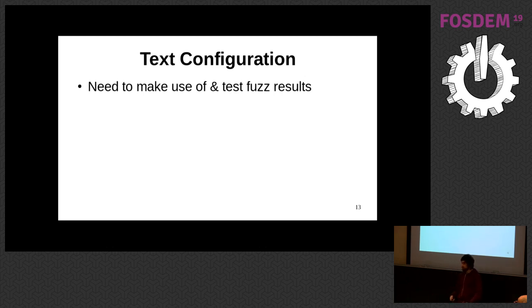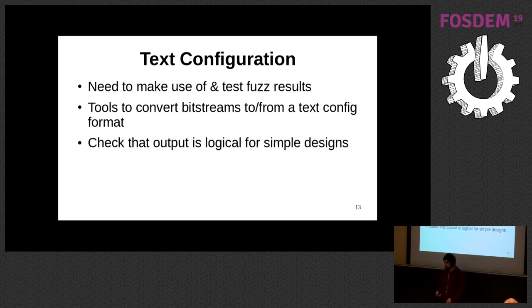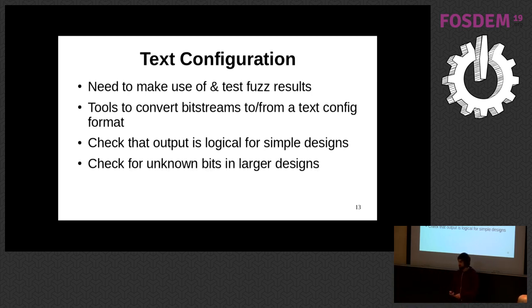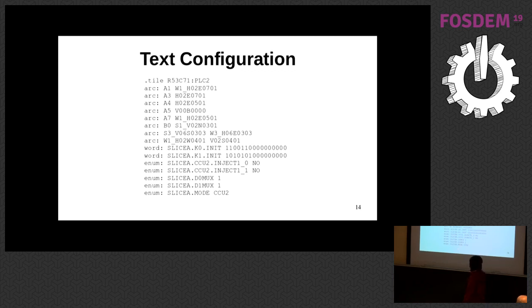To make the bitstream more human-readable, I created a textual configuration format — since a bitstream is just a series of bits, not very useful to a human. The idea is to represent it at a low level that's still easy to understand, to test fuzzing results and check sensible outputs for simple designs, look for unknown bits in bigger designs, and verify everything. This format also became an intermediate format for post-place-and-route designs. The format is split into tiles with arcs (connections), configuration words like LUT initialization, and enums for textual settings — for example, a slice configured in carry mode.